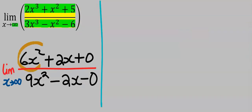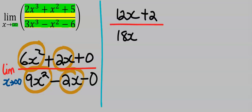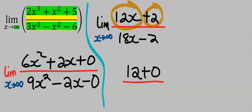Since we still have x in the function, differentiate again. Differentiate 6x² to get 12x. Differentiate 2x to get 2. Differentiate 9x² to get 18x. Differentiate 2x to get 2. Since x is still in the function, differentiate again. Differentiate 12x to get 12. Differentiate the constant 2 to get 0. Differentiate 18x to get 18.